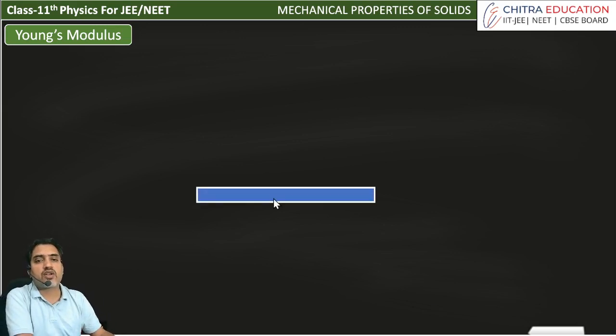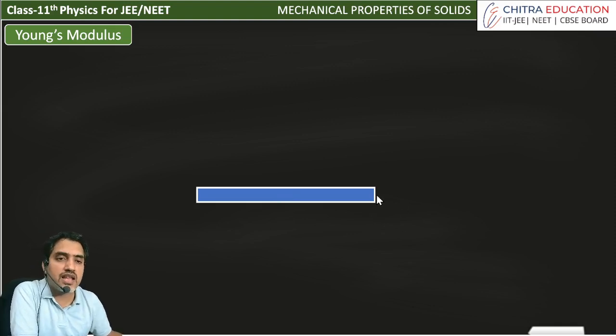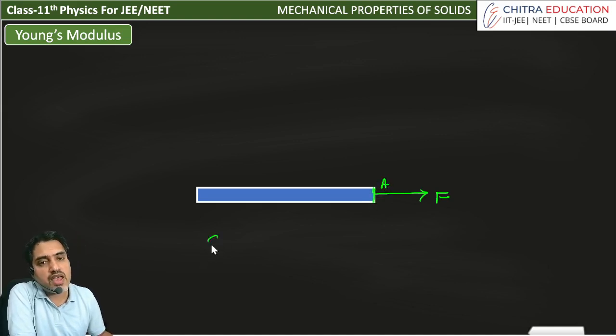For example, we have a rod here. And to this rod, we apply a force F to increase the length. The cross-section area is A. So we will have to understand here what is stress? Stress is F by A.